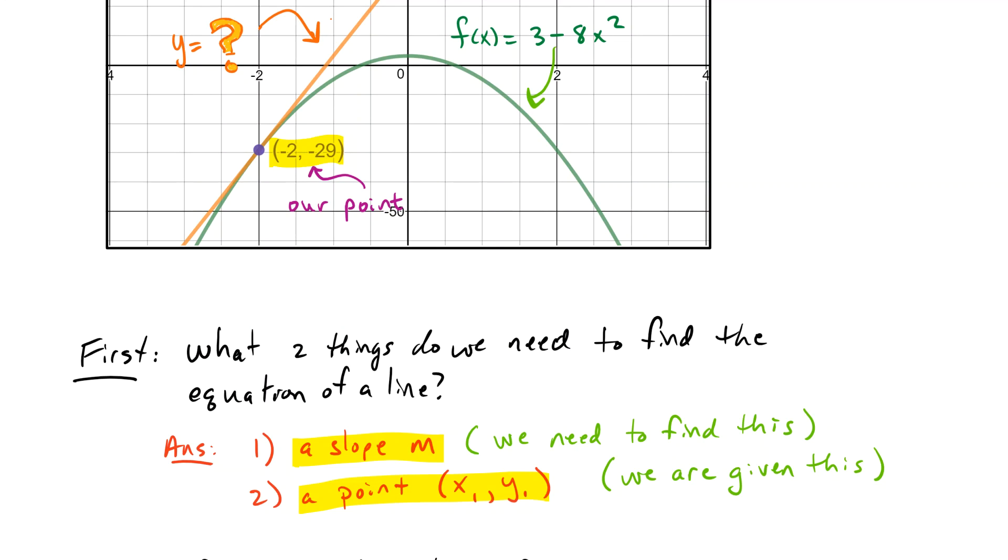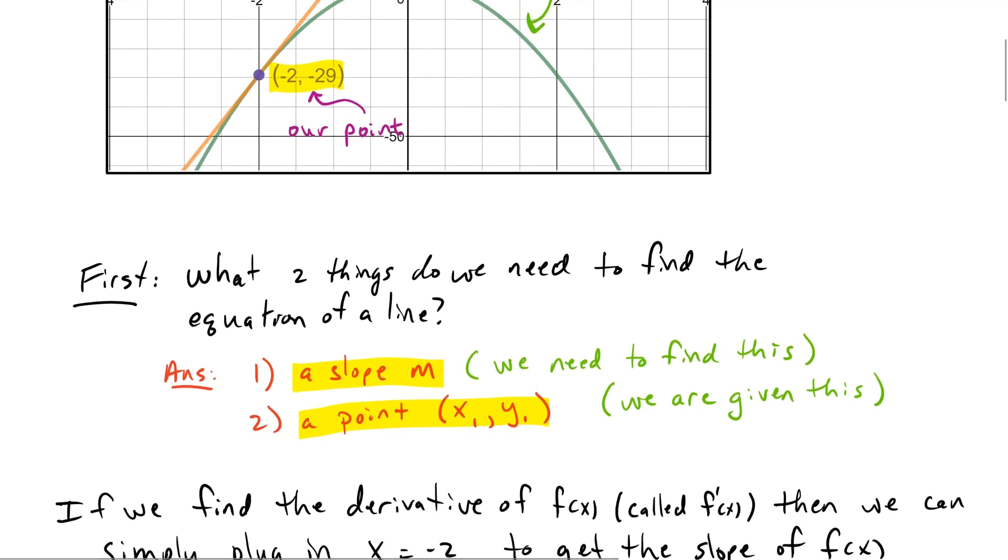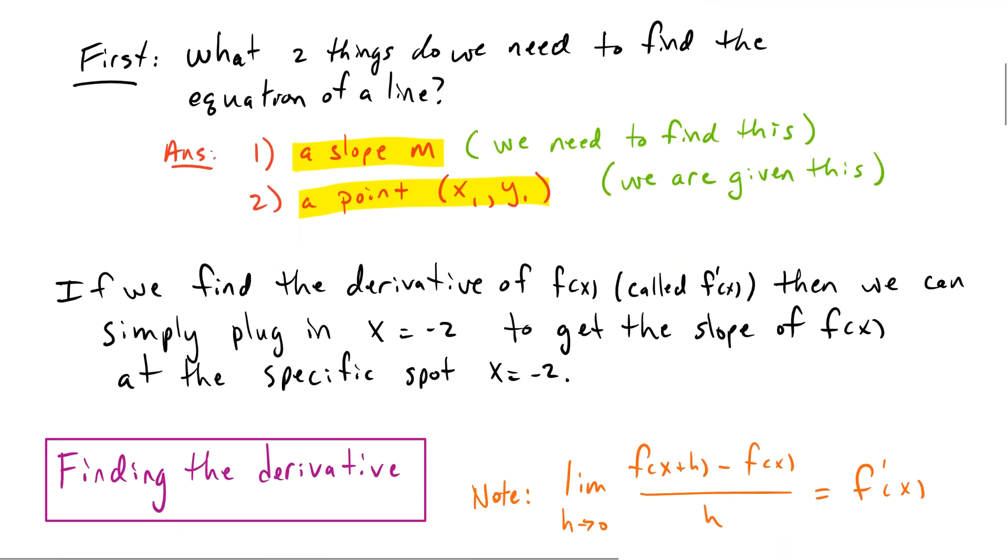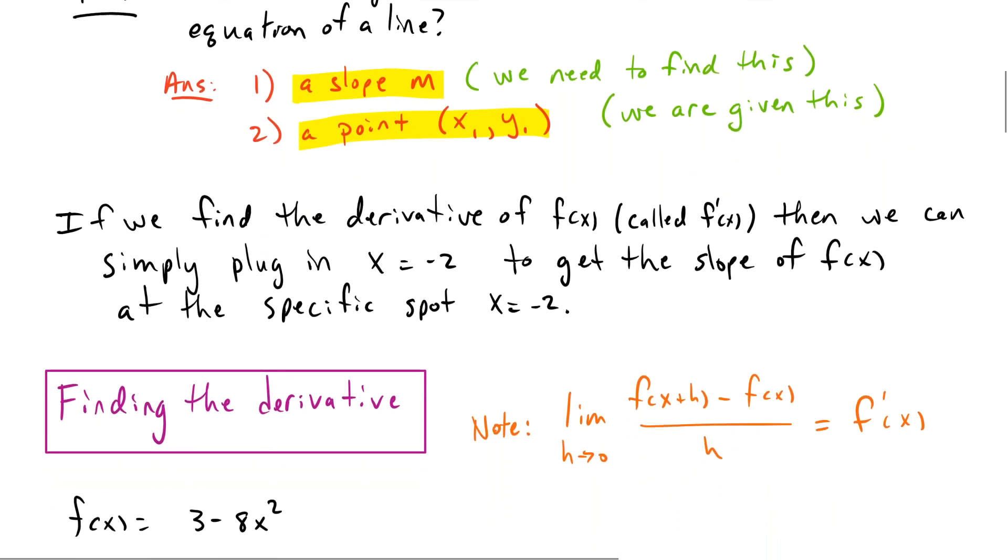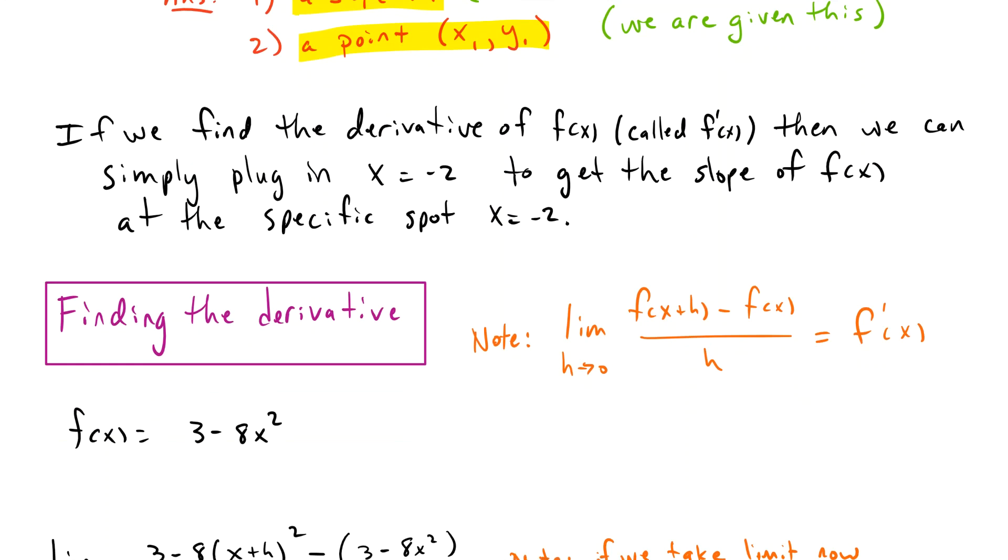So lucky for us, all we have to do is find the derivative of our function f, then plug in x equals negative 2. So if we can find the derivative, that will give us the slope of the parabola anywhere. And then all we have to do is plug in x equals negative 2 into f prime, which is the slope function or the derivative.